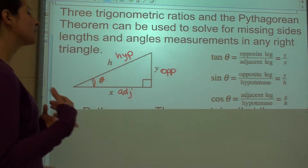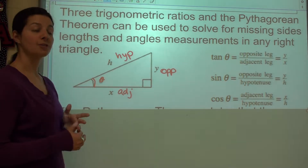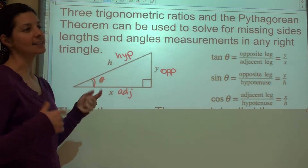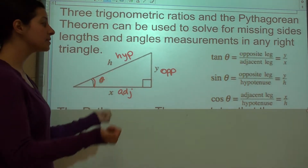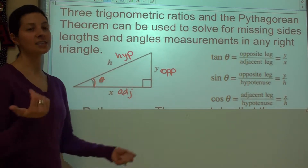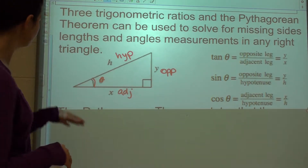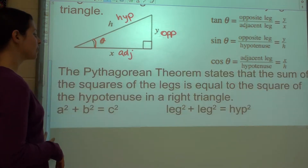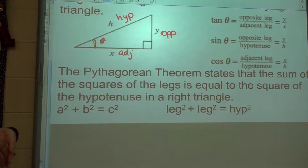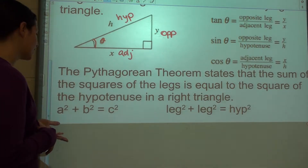You have to look at the picture and see which sides you're given. Whichever sides you're given, that's how you know which trig function to use. If you have an adjacent and an opposite, you use tangent. If you have an adjacent and a hypotenuse, you use cosine. The Pythagorean Theorem states that the sum of the squares of the legs is equal to the square of the hypotenuse in a right triangle.